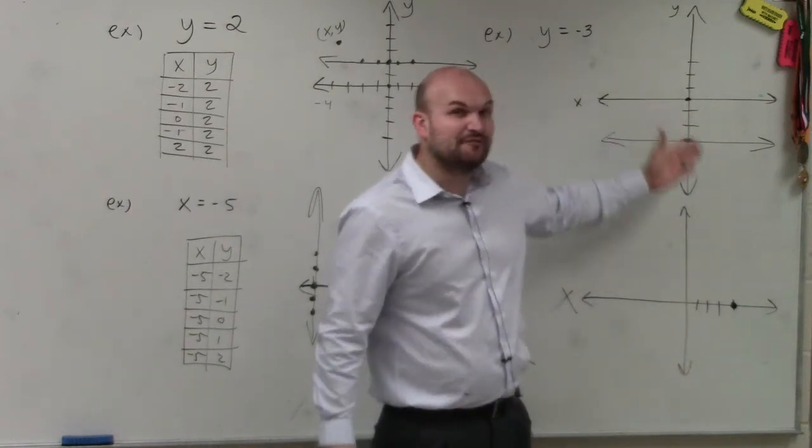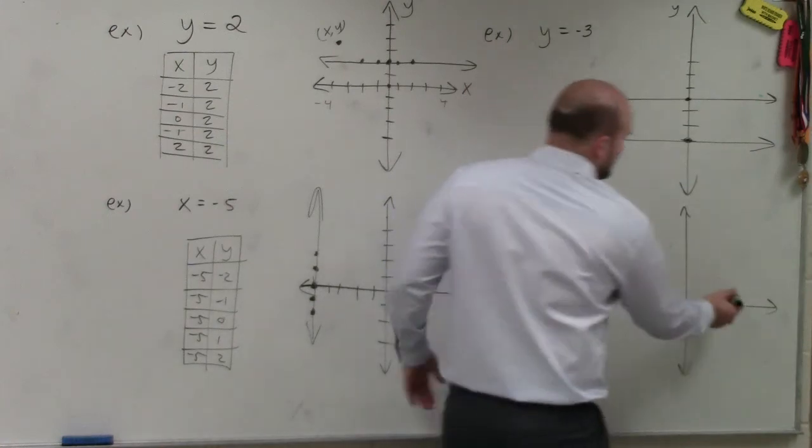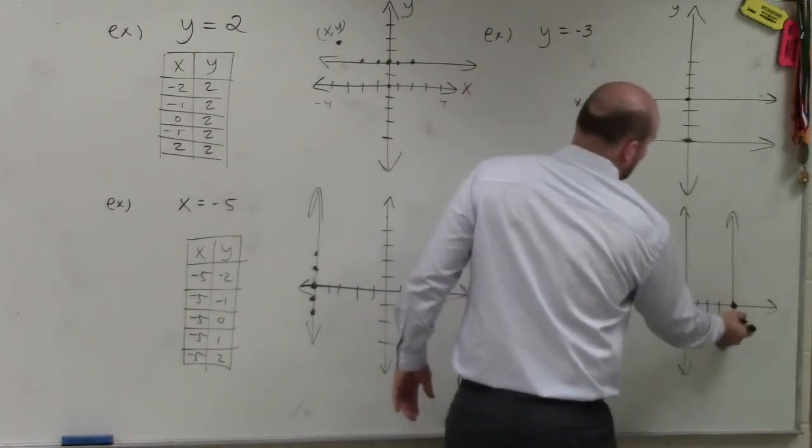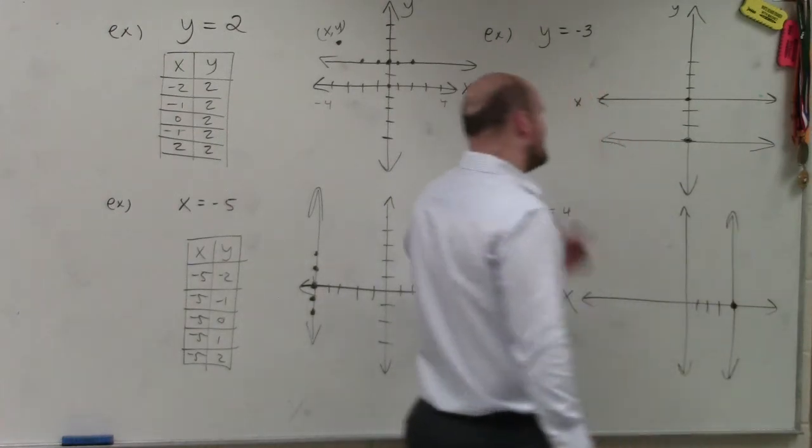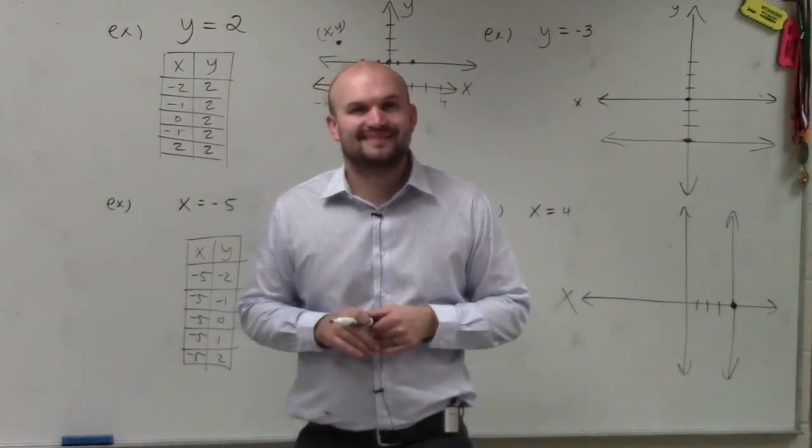Well, it doesn't matter. x is always equal to 4. So therefore, it's going to produce a vertical line at x equals 4. So there you go, ladies and gentlemen. That is how you graph horizontal and vertical lines. Thanks.